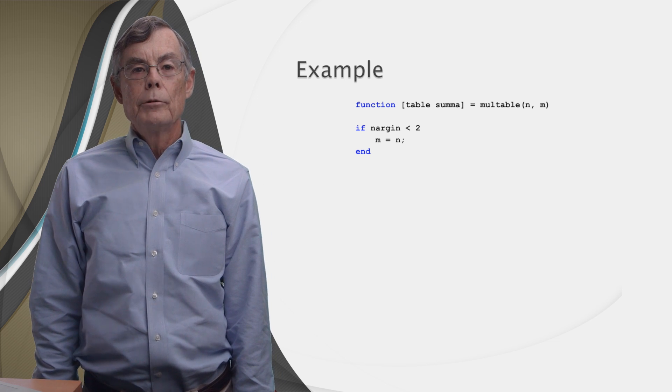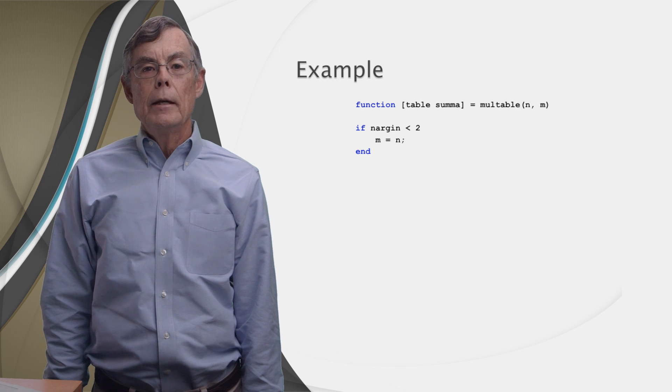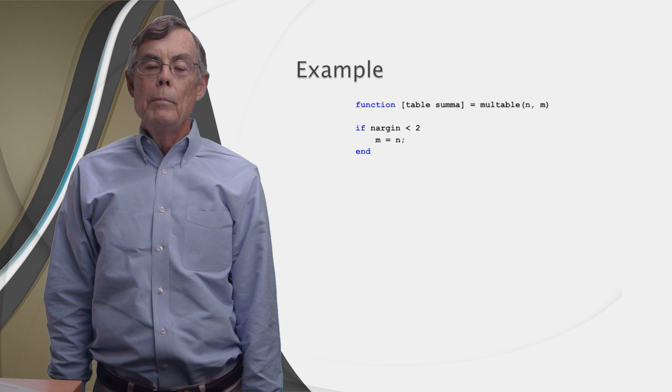When m is omitted, we're supposed to return an n by n matrix. So we set m equal to n. This is a classic example of setting a default value for an input that's omitted.